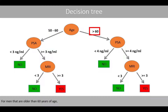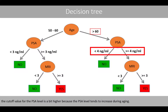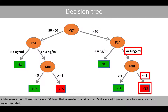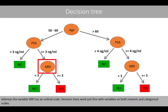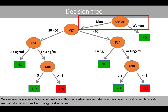For men that are older than 60 years of age, the cut-off value for the PSA level is a bit higher because the PSA level tends to increase during aging. Older men should therefore have a PSA level that is greater than 4 and an MRI score of 3 or more before a biopsy is recommended. Note that the variables age and PSA are on a numerical scale, whereas the variable MRI has an ordinal scale. Decision trees work just fine with variables on both numeric and categorical scales. This is one advantage with decision trees because most other classification methods do not work well with categorical variables.